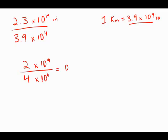Well, 2 over 4, that's 0.5. 10 to the 14th divided by 10 to the 4th. You may remember the laws of exponents. That is 10 to the 14th minus 4. So that will be 0.5 times 10 to the 10th.